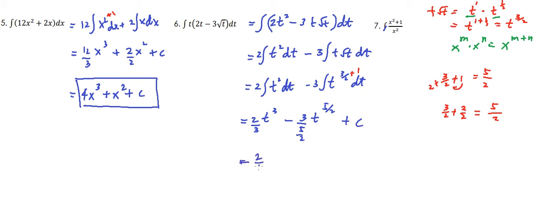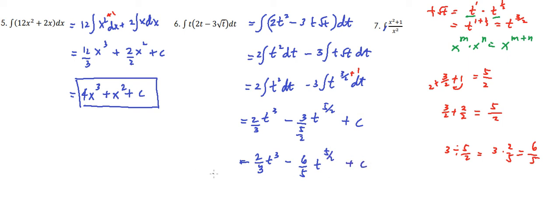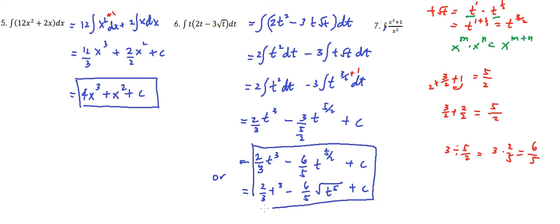So we have 2 thirds t cubed minus — 3 divided by 5 halves is equal to 3 times 2 over 5, which is 6 over 5 — so minus 6 fifths t raised to 5 halves plus C. Or we can also write this as 2 thirds t cubed minus 6 fifths times the square root of t raised to 5, plus C.